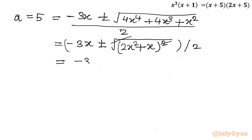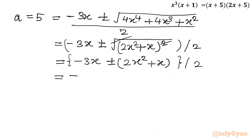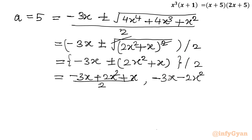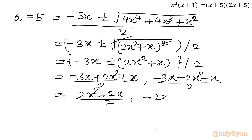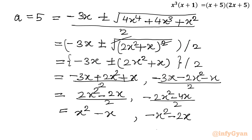Now splitting the plus or minus sign: using the plus sign gives (−3x + 2x² + x) / 2 = (2x² − 2x) / 2 = x² − x. Using the minus sign gives (−3x − 2x² − x) / 2 = (−2x² − 4x) / 2 = −x² − 2x. So the two solutions for a are x² − x and −x² − 2x.